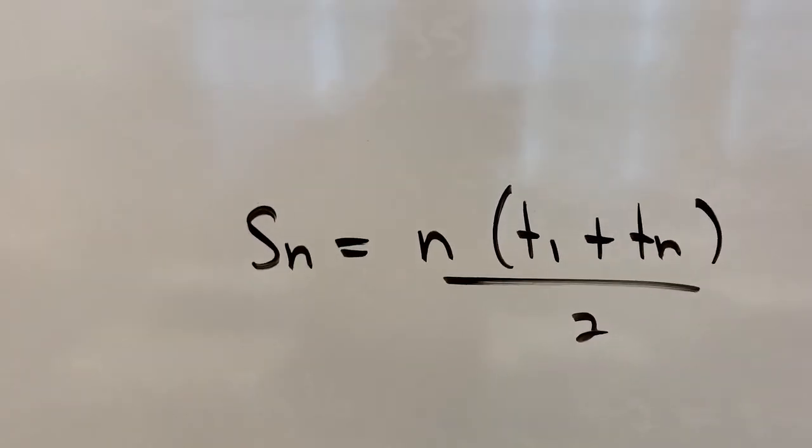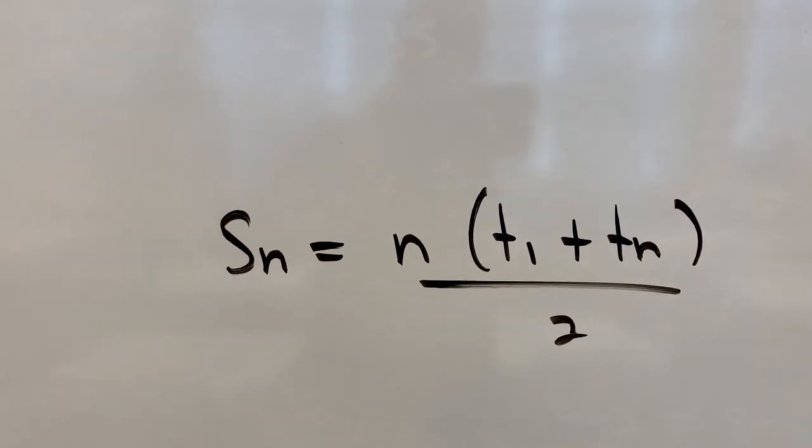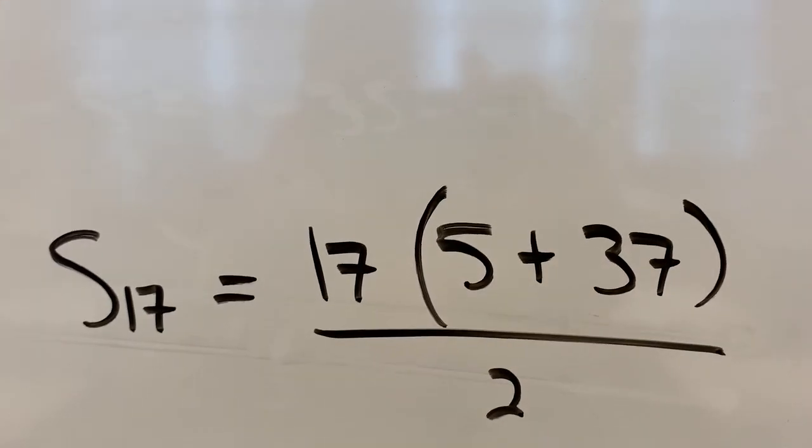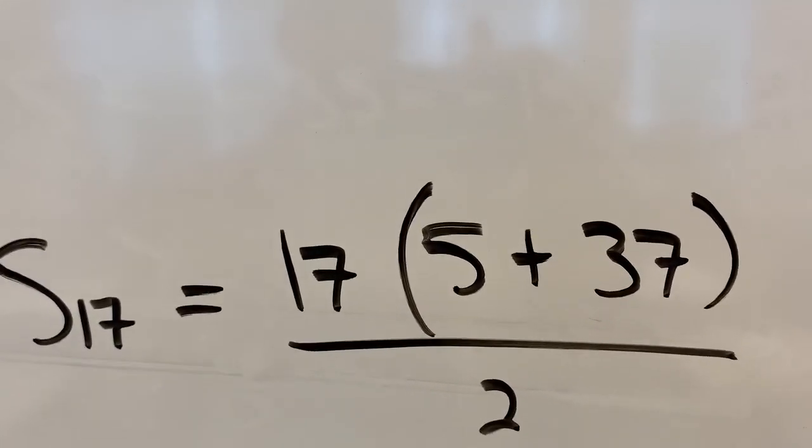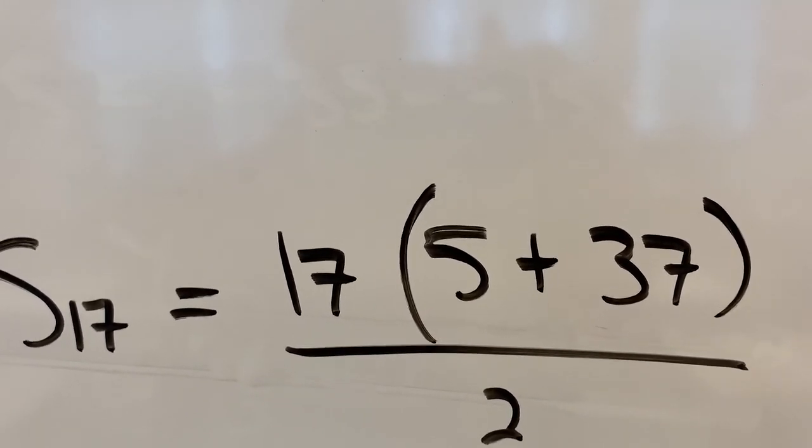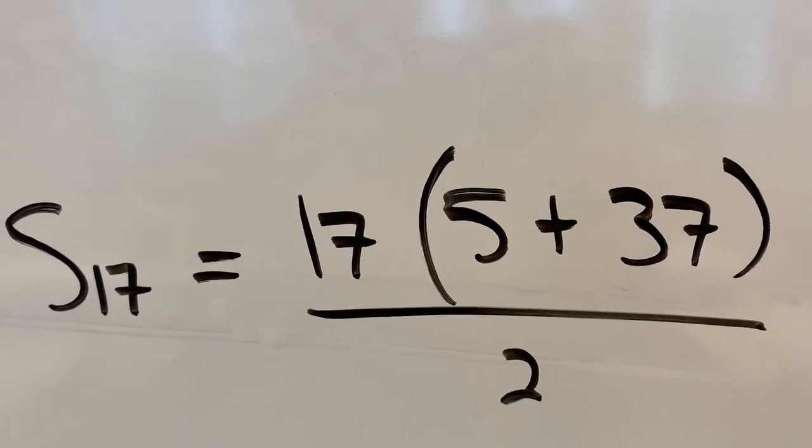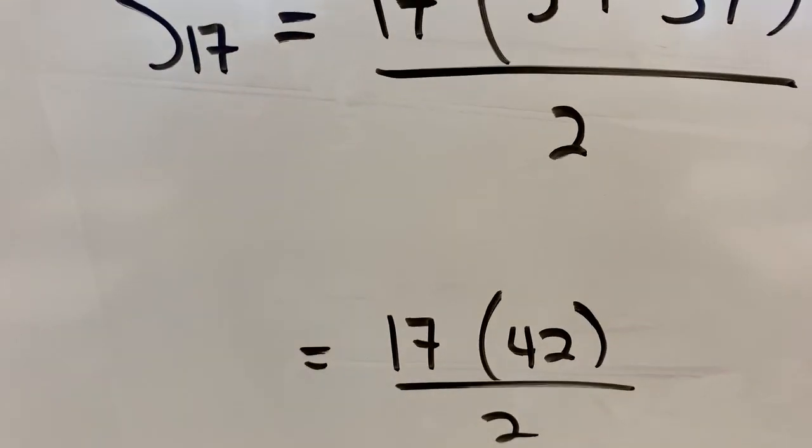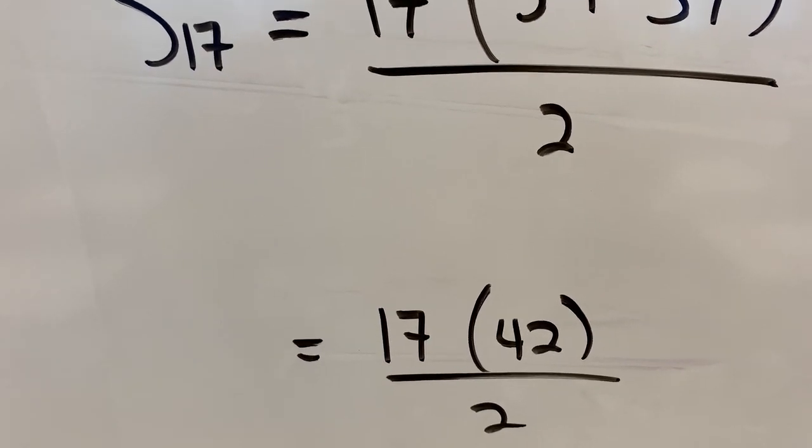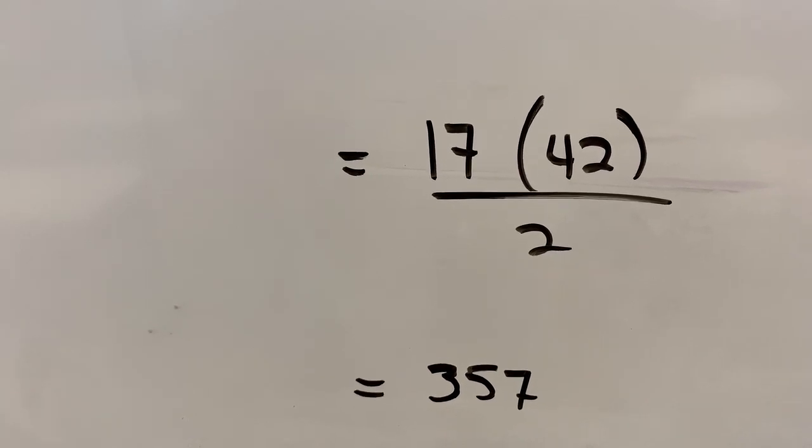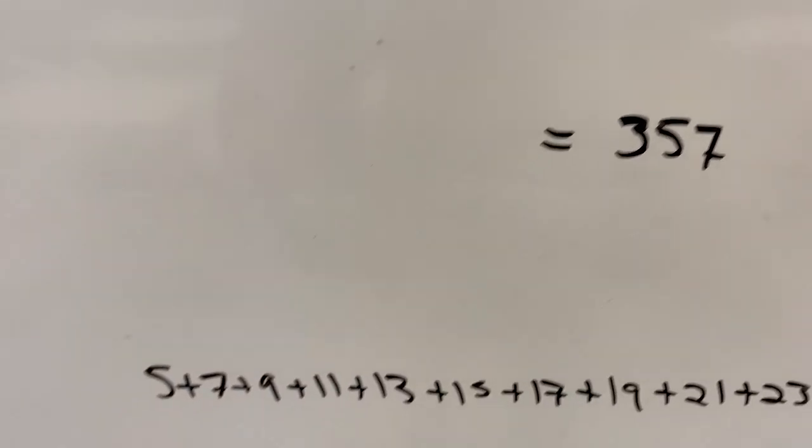But now what that means is I can use this formula, the simpler formula, quite easily. All I have to do is say, okay, well I'm finding S17, so n is 17, the first term was 5, the last term was 37 as given right in the question, and I take that and divide by 2. So 5 plus 37 is 42, 17 times 42 divided by 2 gives me 357—a far more efficient way than if I had actually tried to add up all 17 of those terms.